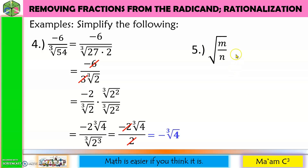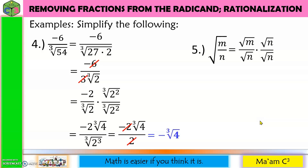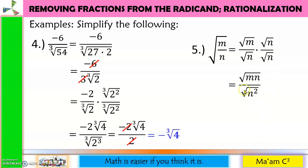Number 5, this time with variables. Separate the numerator and denominator. The index is 2 and the exponent of n is 1, so I need 1 more square root of n. Multiply both numerator and denominator by the square root of n. Since the indices are the same, combine into one radical symbol: the numerator becomes the square root of mn. For the denominator, 1 + 1 = 2, giving the square root of n squared. The square root and exponent 2 cancel. Final answer: square root of mn over n — no more radical in the denominator.